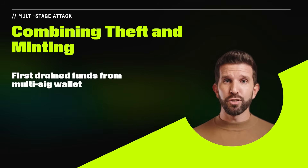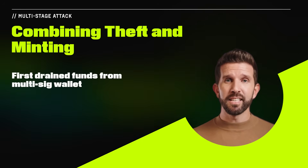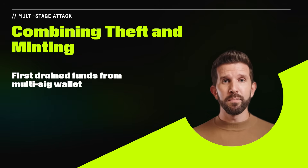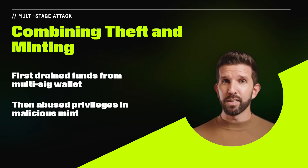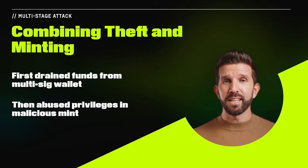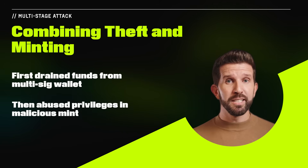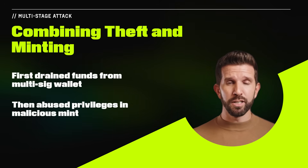Initially, the attacker drained funds from the compromised account. In total, approximately $18 million was stolen this way across Ethereum and BSC. However, the attacker later realized that the access they stole also granted minting permissions. Several billion tokens were minted, swapped, and bridged to Ethereum for a total of $41 million in losses.